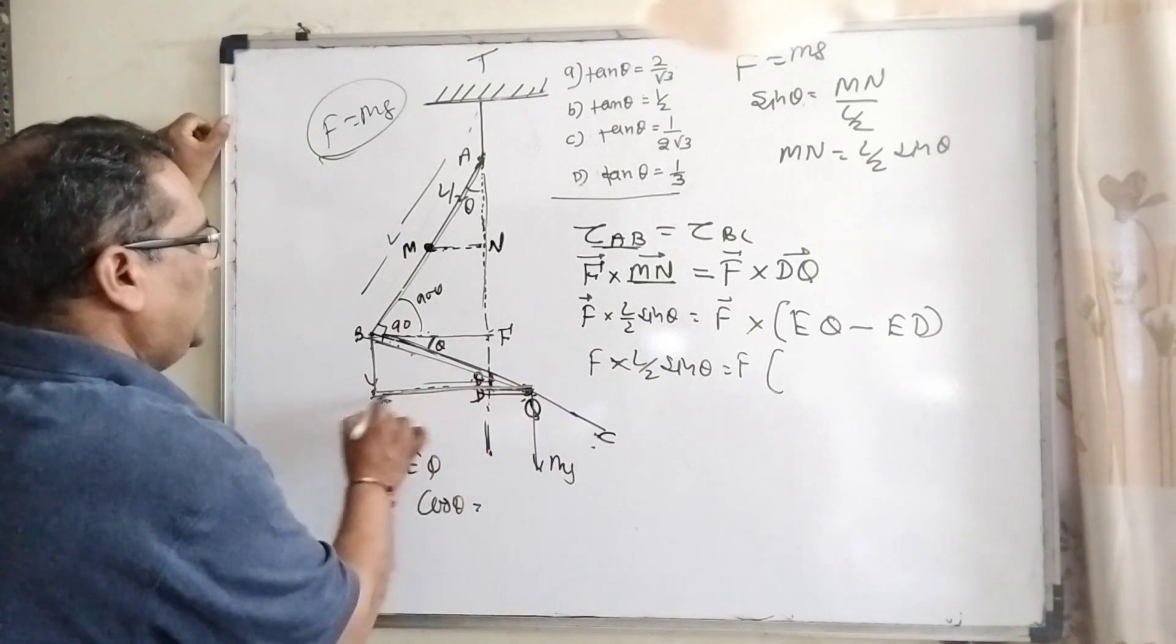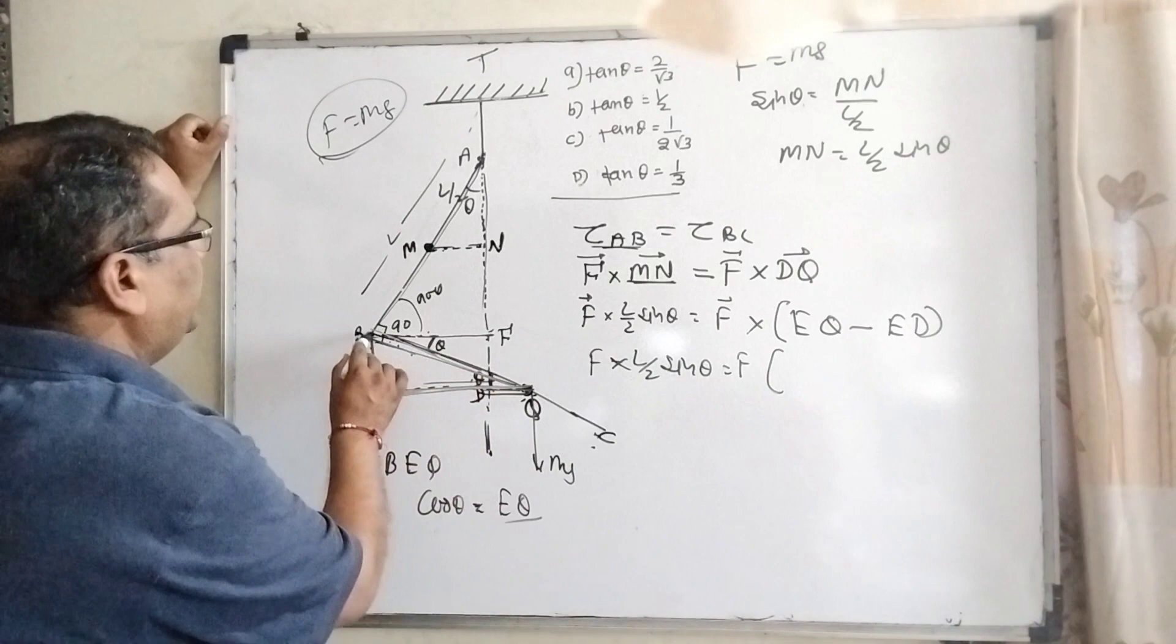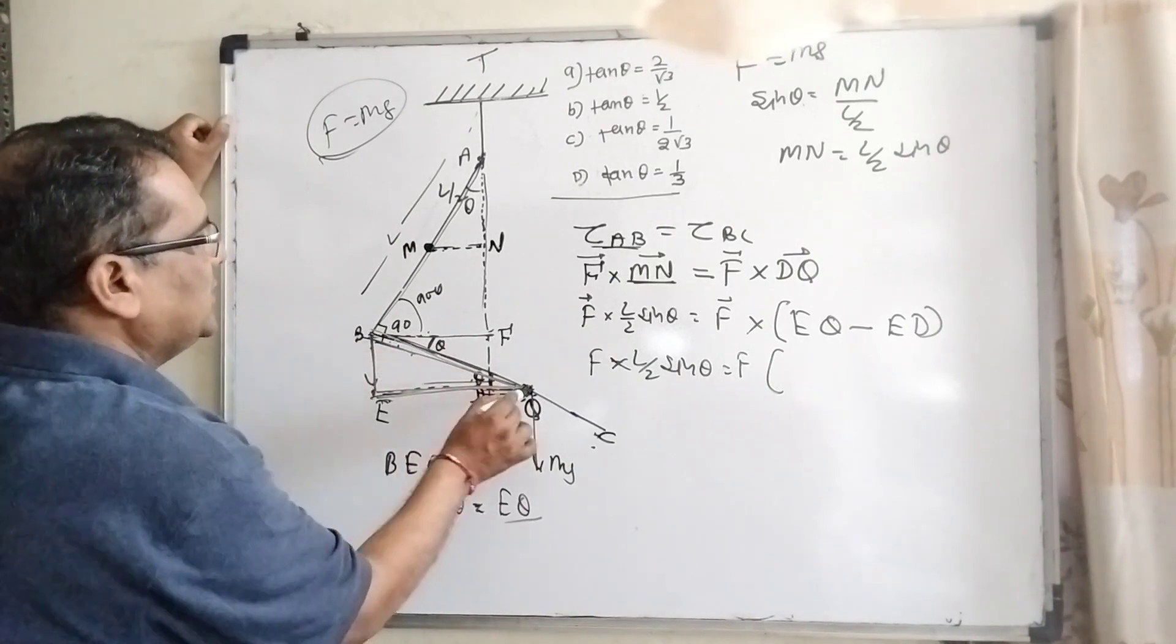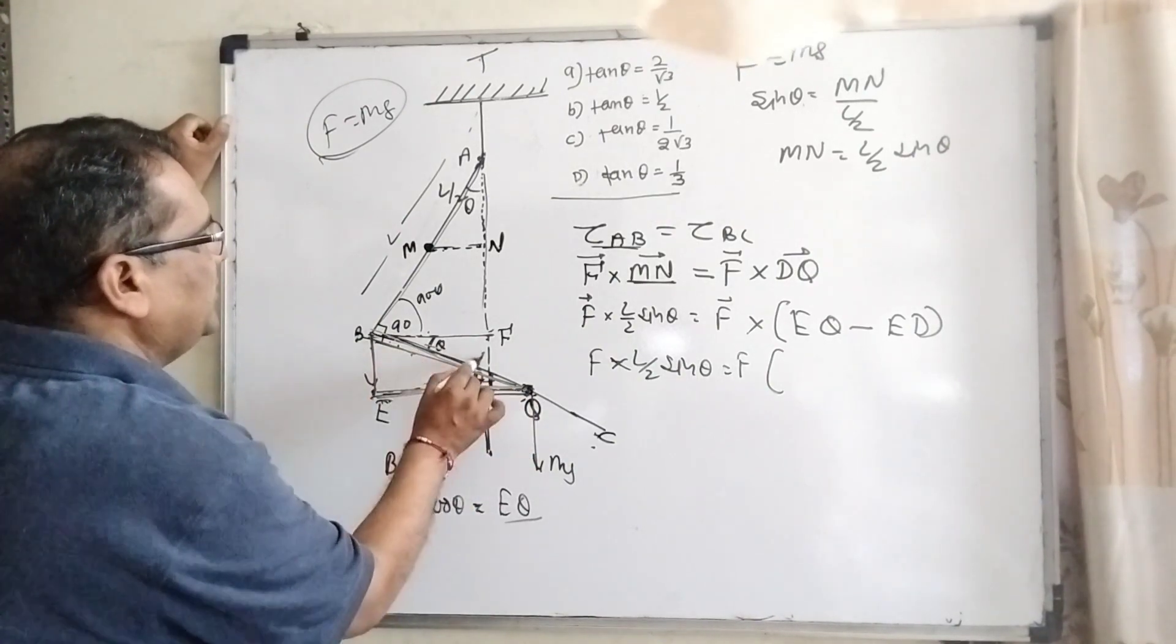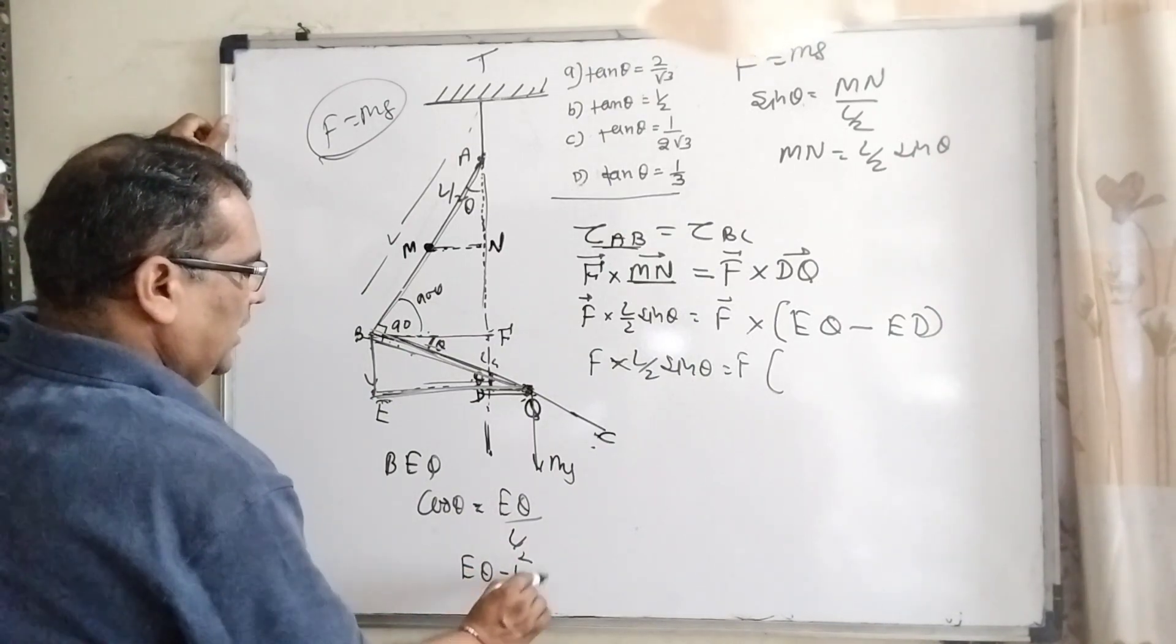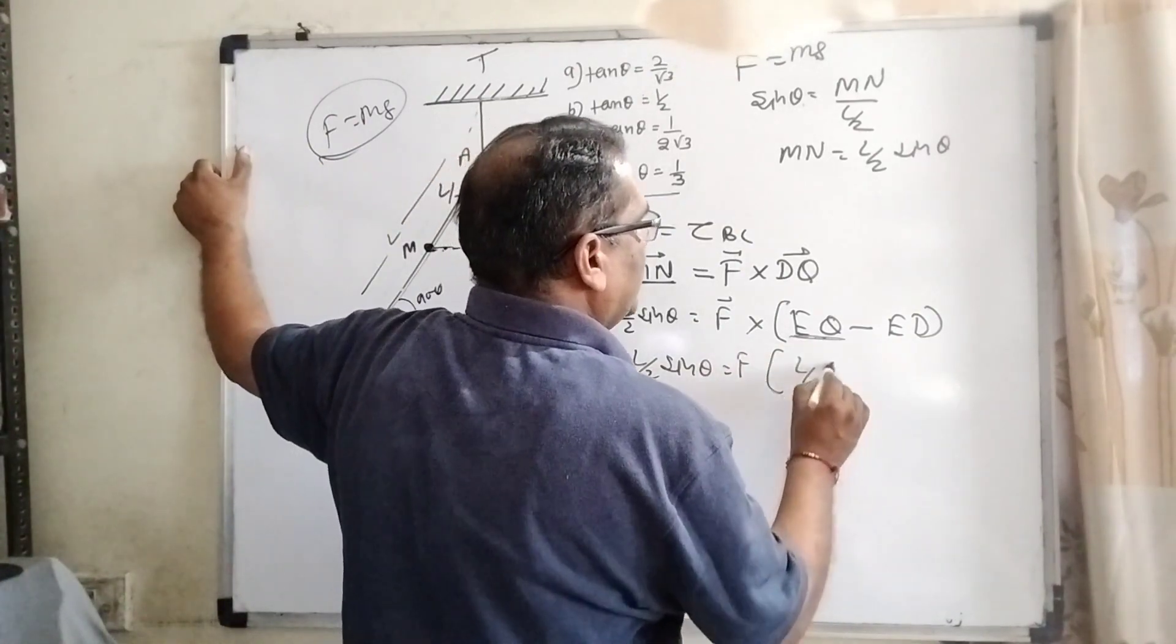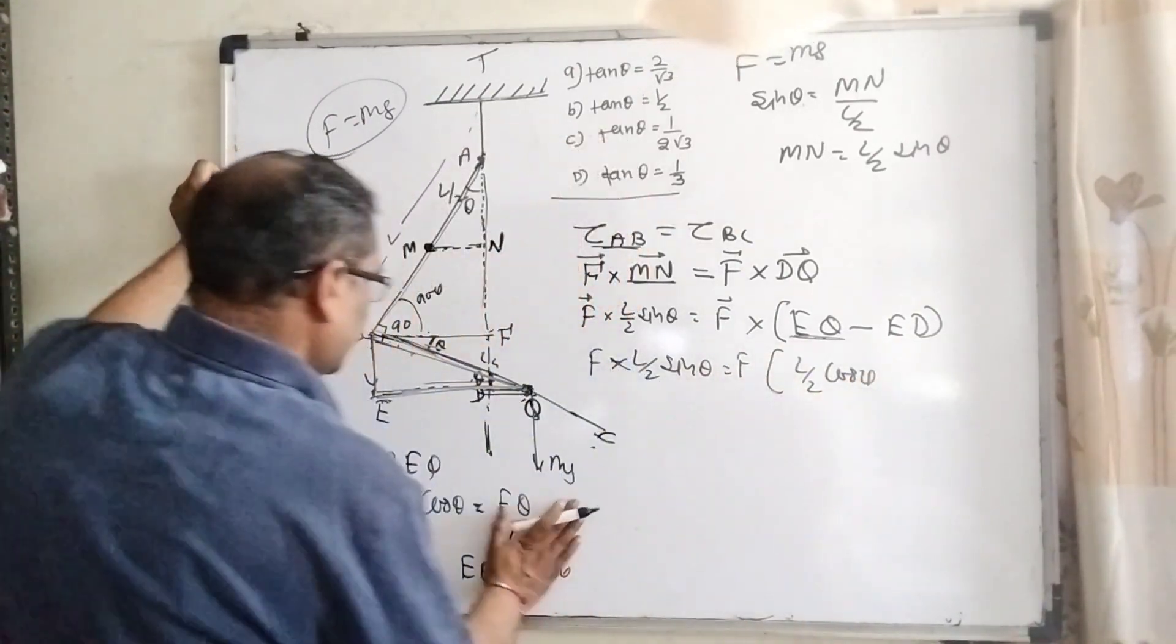Now EQ - for EQ you can take the triangle BEQ. Cos theta equal to base, base means EQ, and hypotenuse BQ. You can see that it is the center of mass point means L by 2. So EQ can be written as L by 2 cos theta. So in the place of EQ, L by 2 cos theta.